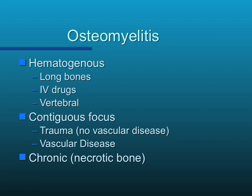You can also have contiguous-focused osteomyelitis from the outside going in, usually related to either trauma in the setting of no vascular disease, or in the setting of vascular disease related to ischemia and tissue breakdown. And there's also chronic osteomyelitis, which usually involves necrotic bone.